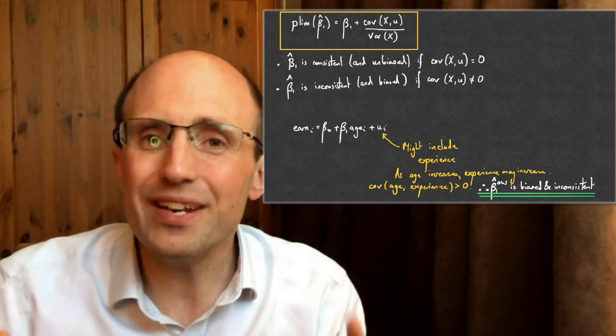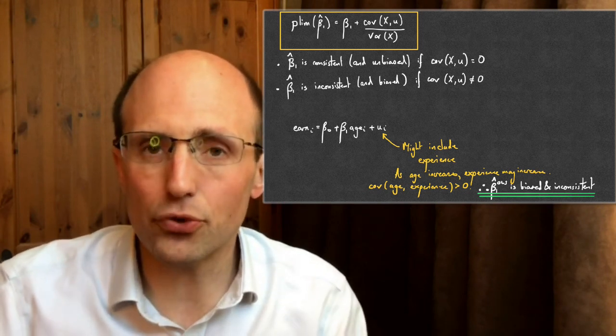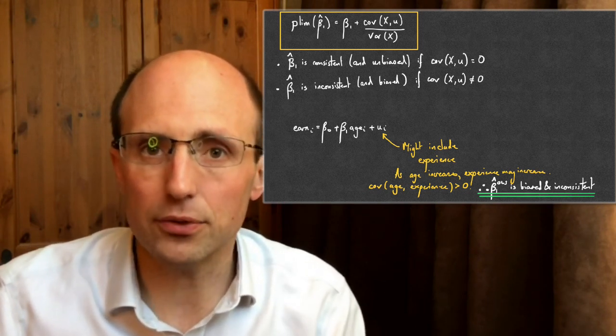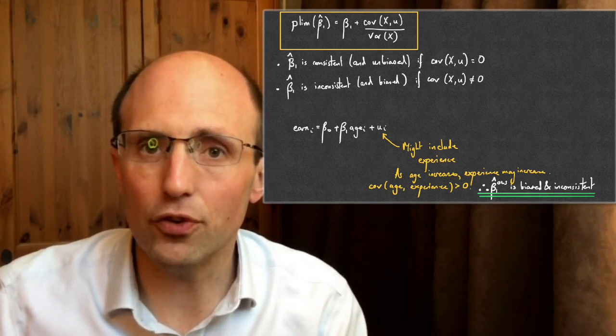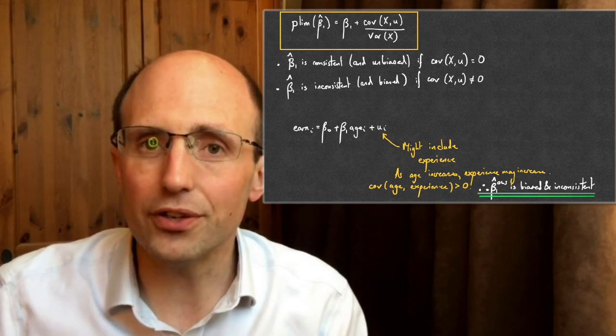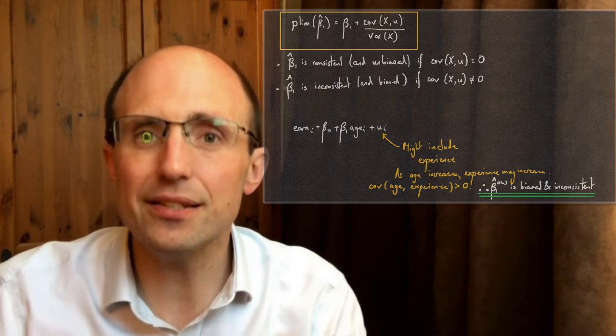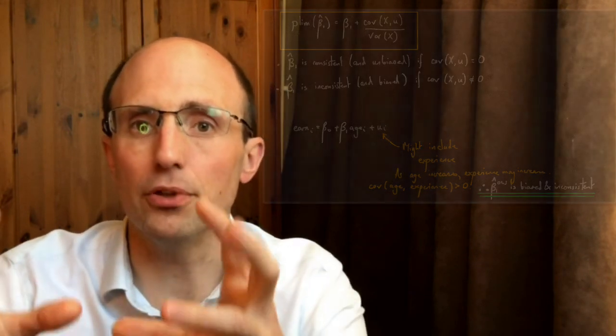The next thing we're going to think about is what is known as omitted variables bias, and we'll try to formalise this a little bit more.